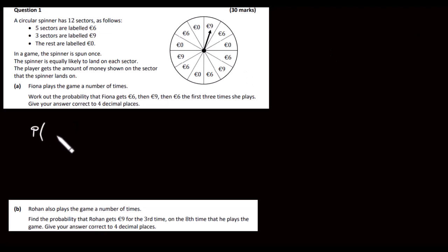We want the probability that she gets 6 euros, and then 9 euros, and then 6 euros. So that's going to be 5 twelfths, there are 5 six euros, multiplied by 9 euros, there are 3, so it's going to be 3 out of 12, and then 6 euros again, 5 out of 12. So when you do that, you get 25 over 576. To 4 decimal places then, is what we were asked, so that's 0.0434.